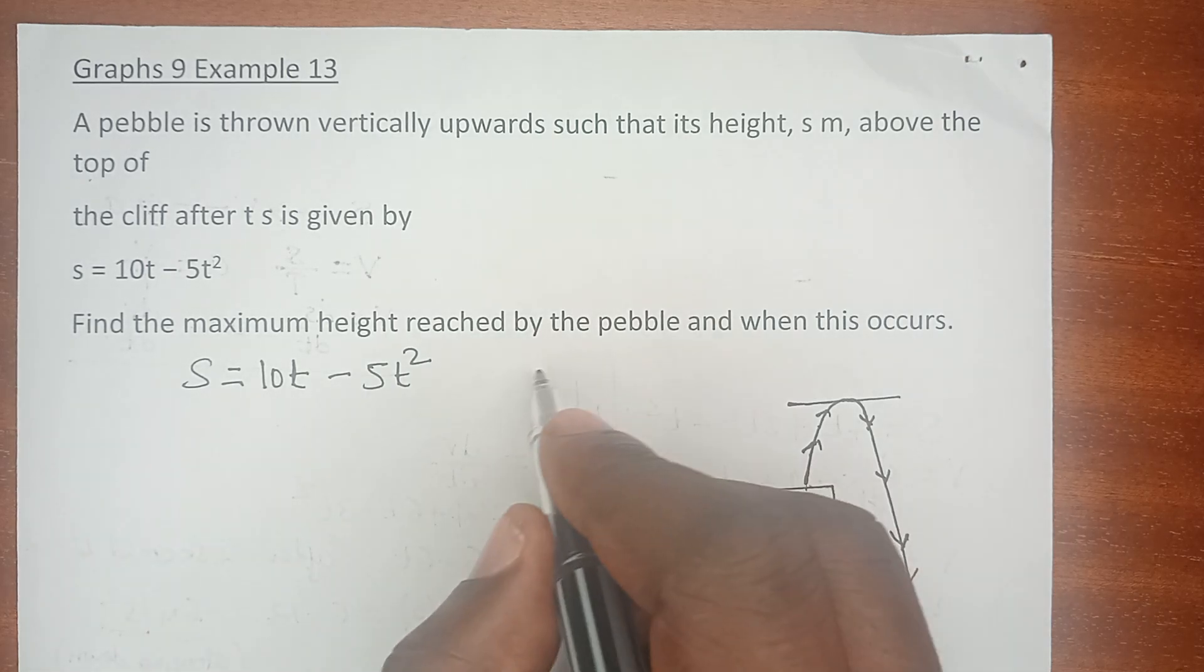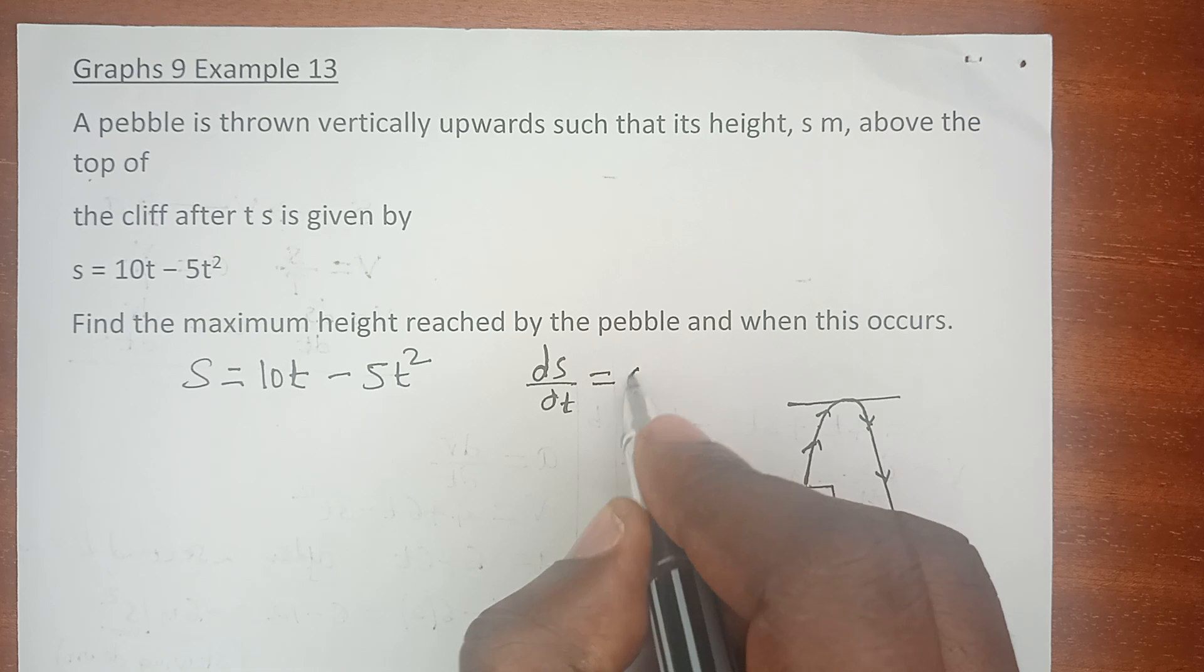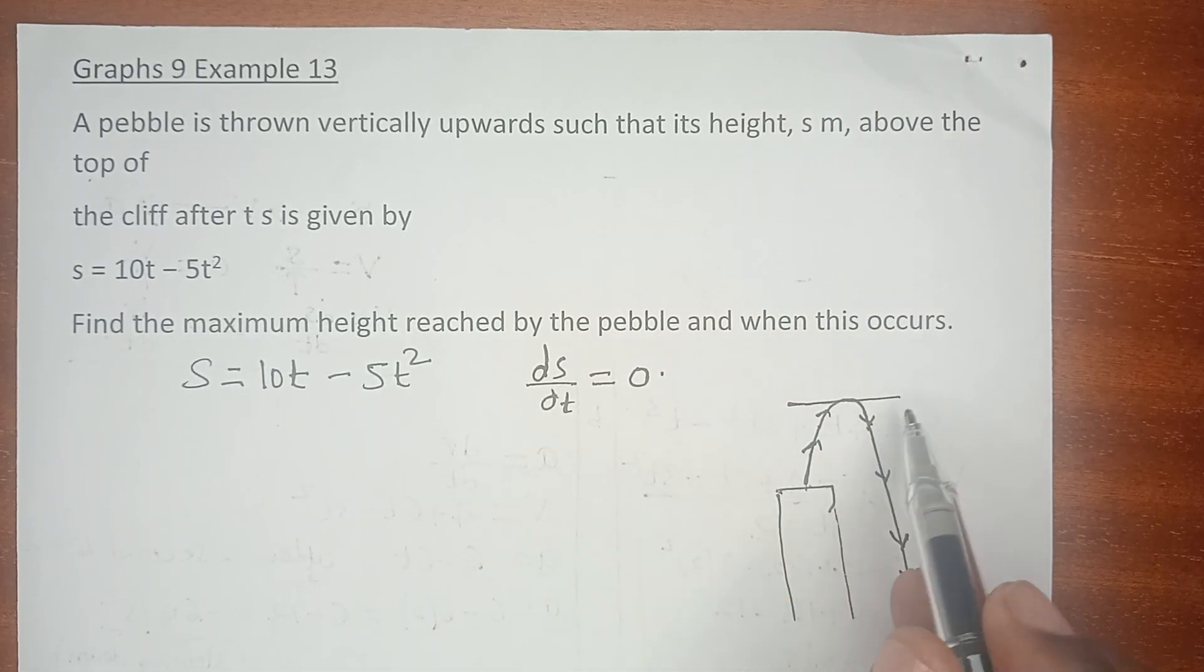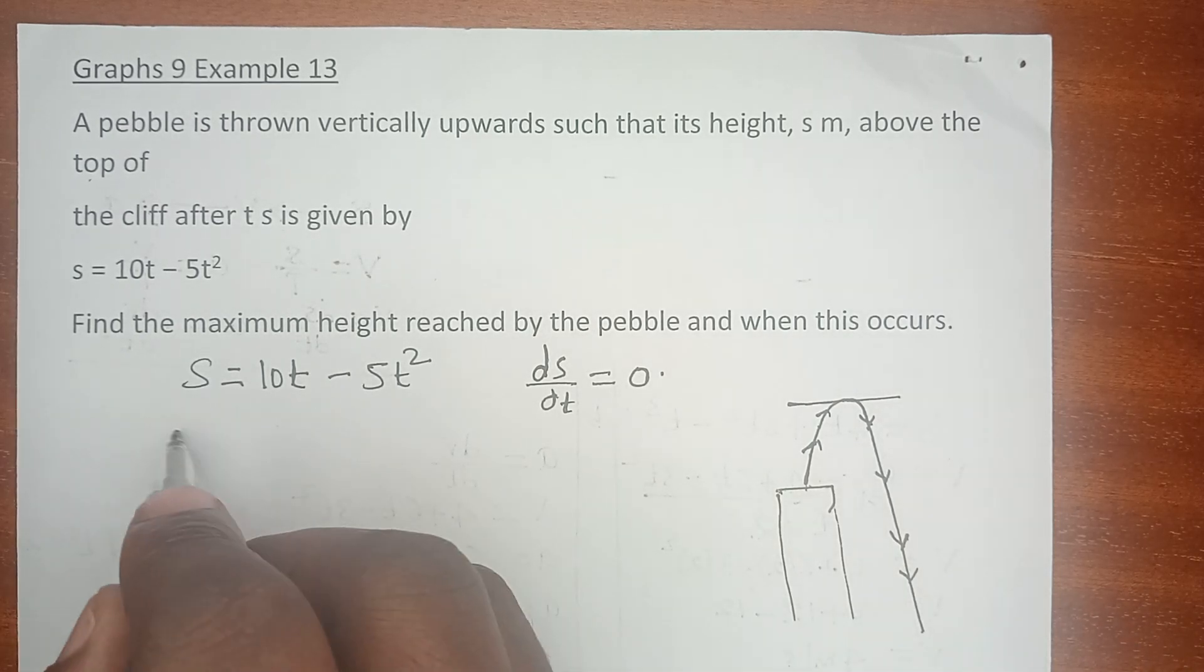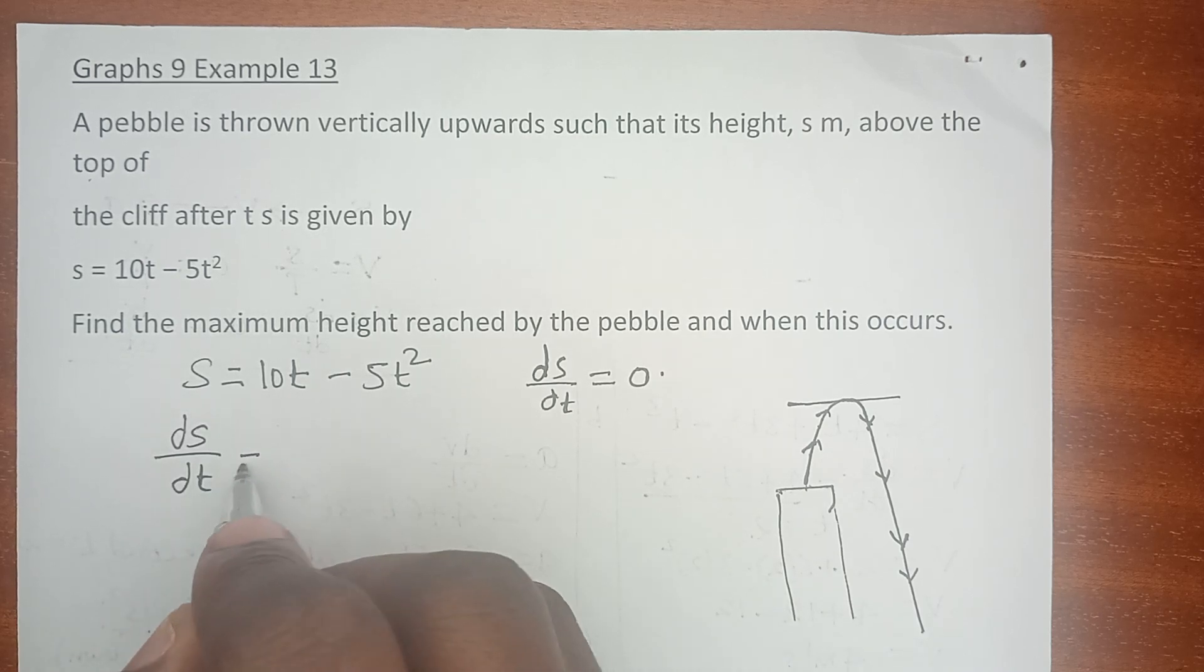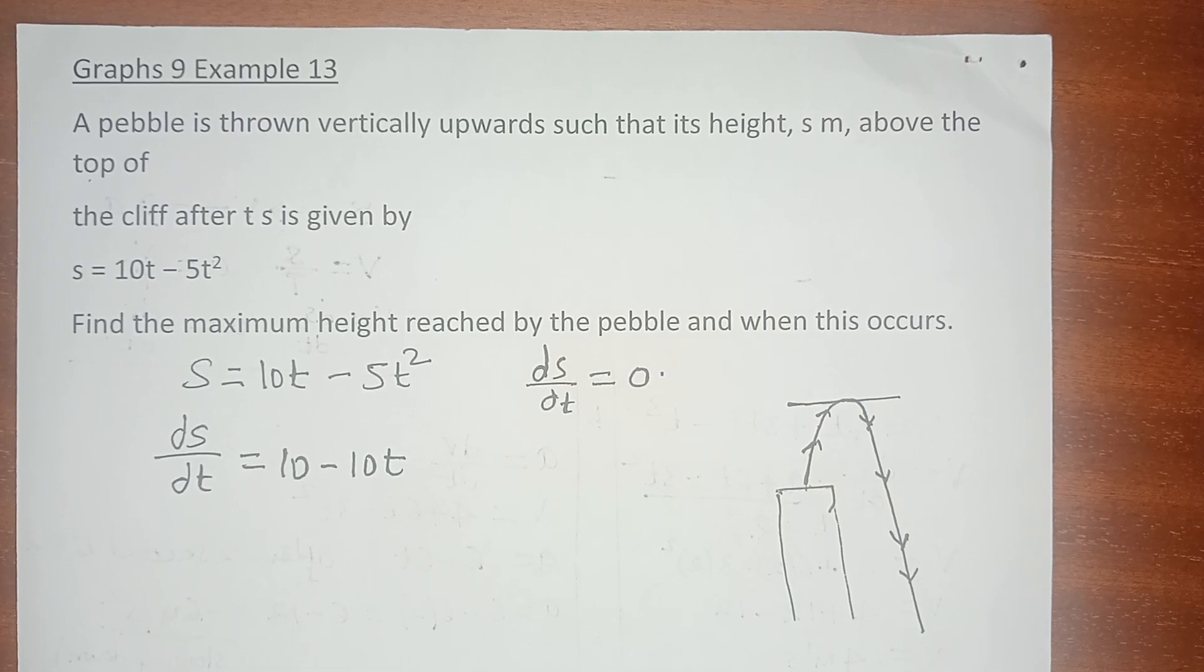ds/dt at this particular point, because this is the maximum height of the pebble, is going to be zero. What is the change in displacement with respect to time? It is obviously going to be 10 - 10t. We know ds/dt is this and we know at maximum point ds/dt should be zero.